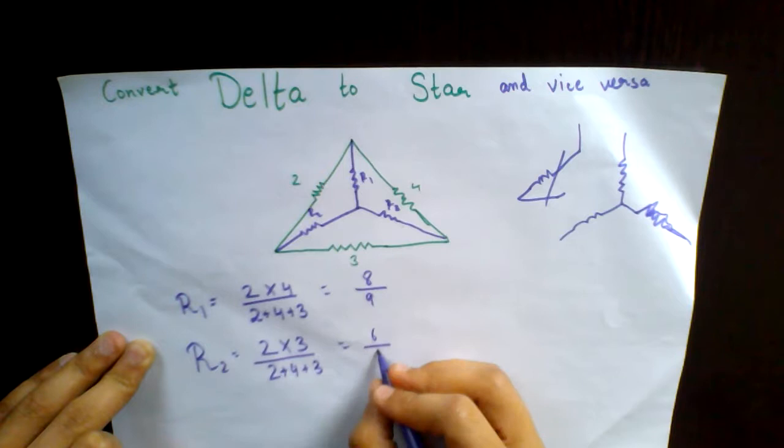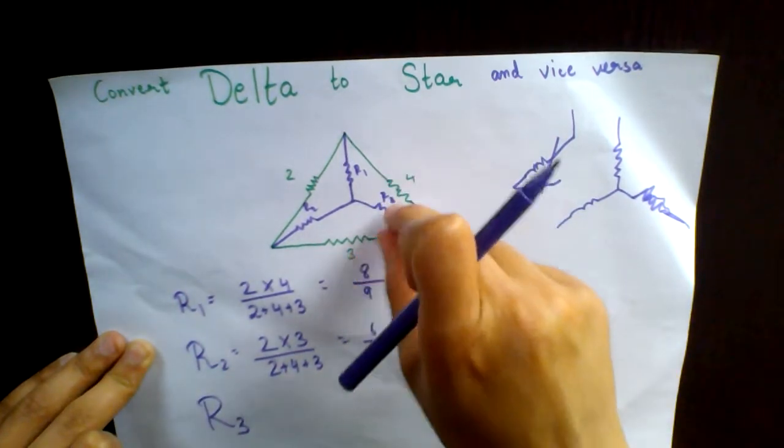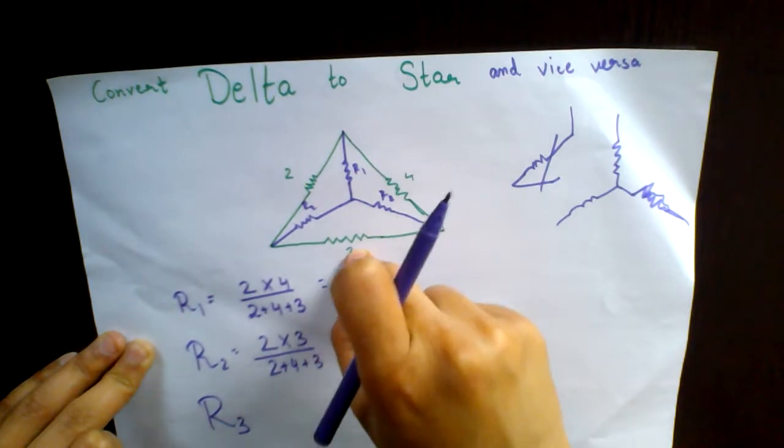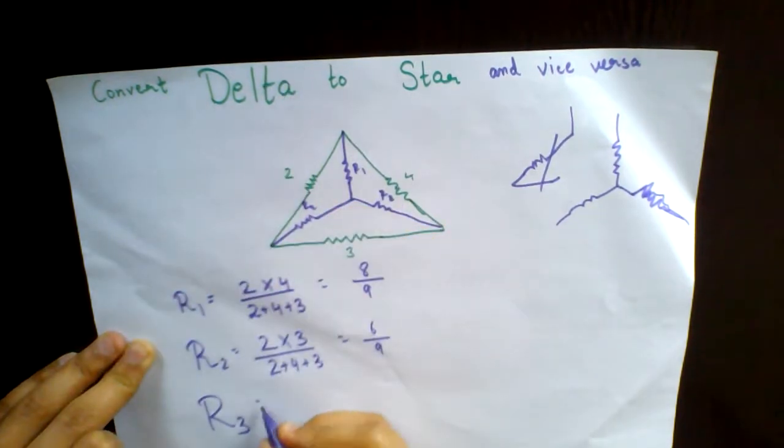Similarly, for R3, you have 4 into 3 upon 4 plus 3 plus 2.